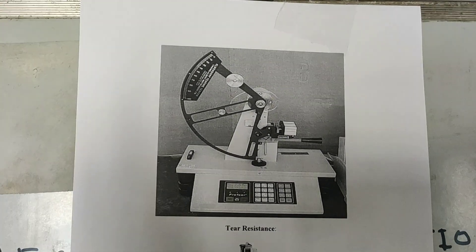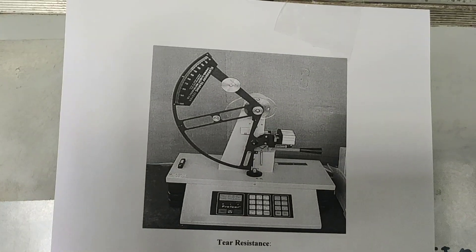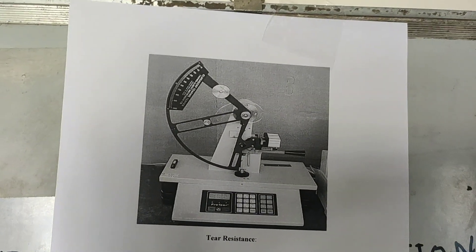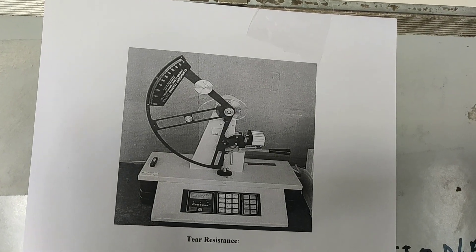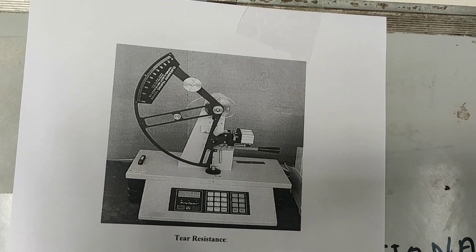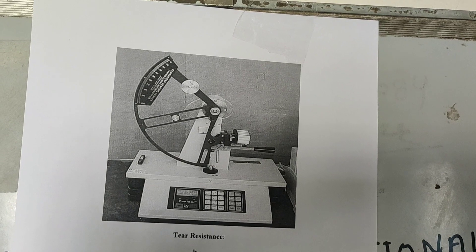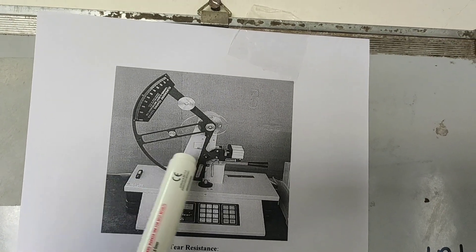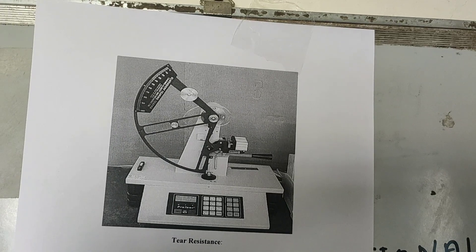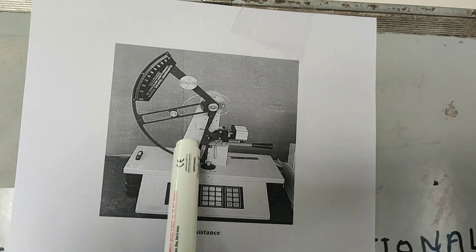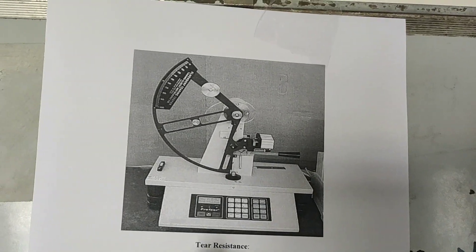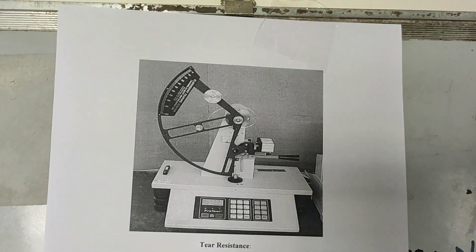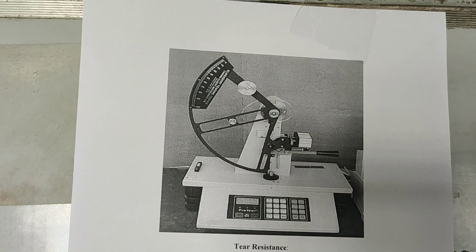Internal tearing measures the energy required to propagate an internal tear, while edge tearing measures the energy required to initiate a tear. Using this instrument, the initiation of a tear can be measured and read directly from the display. That is how you calculate tear resistance.